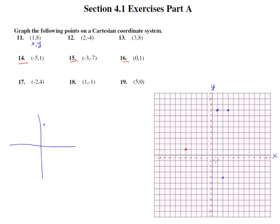15 is negative 3: 1, 2, 3 and then down 7: 1, 2, 3, 4, 5, 6, 7 will be right there.